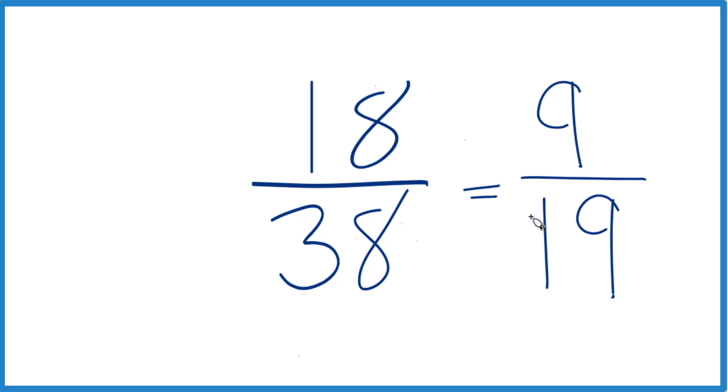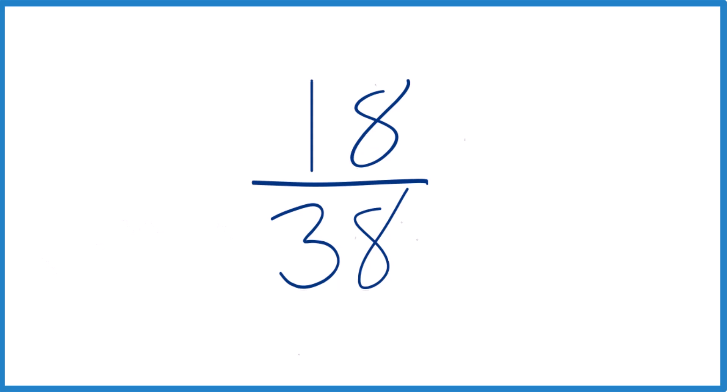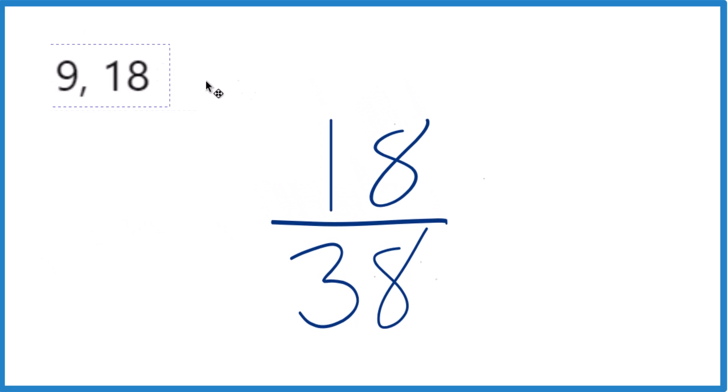Another way to do this, probably the way the teachers might want you to do it, is to take and look at the factors for 18 and 38 and find the greatest common factor. So these are the factors for 18: 1 times 18, 2 times 9, 3 times 6.